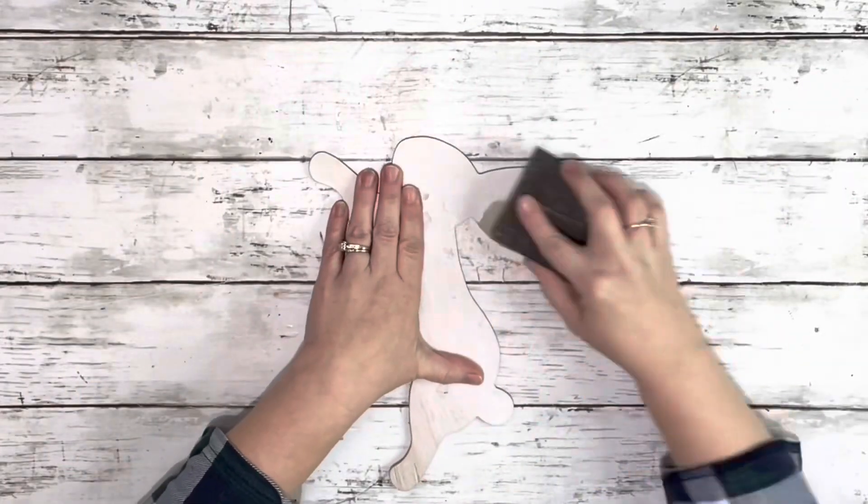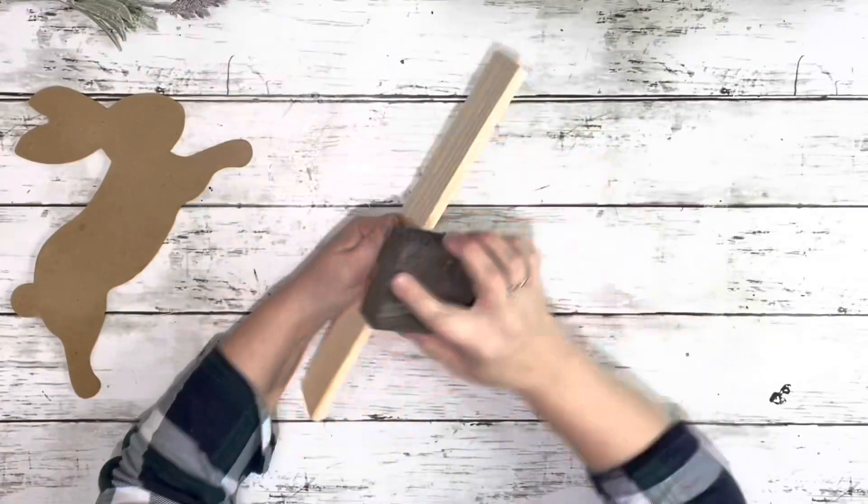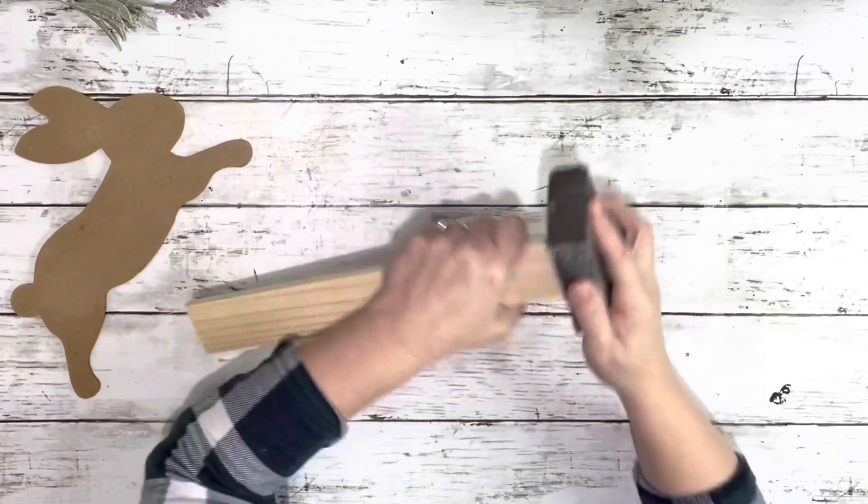Once those pieces were off, I gave the whole thing a quick sanding. I also grabbed this piece of wood from Dollar Tree and gave that a quick sanding as well.